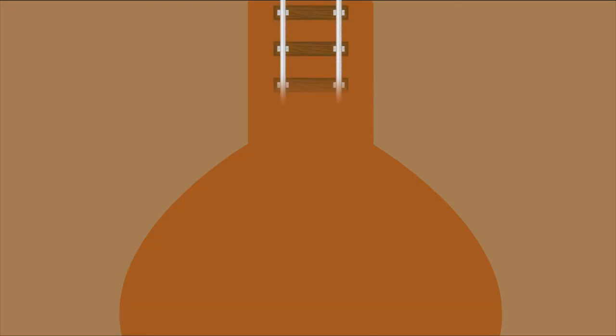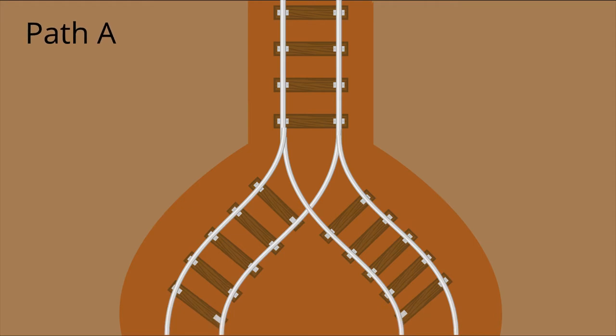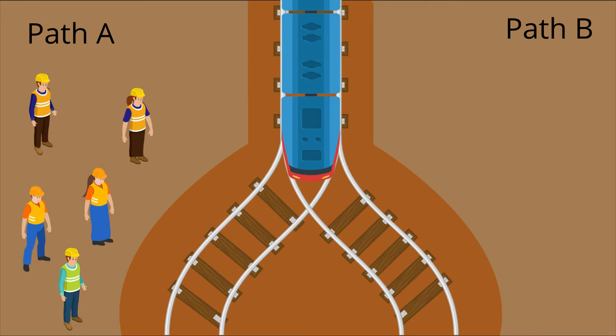The Reaper has taken control of a trolley car careening down Path A. However, today is the scheduled maintenance day and five workers are cleaning Path A. They will be killed unless the trolley's path is changed. However, the only branch is at Path B, which still has one worker on the tracks.